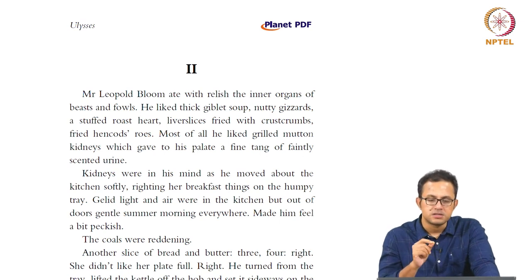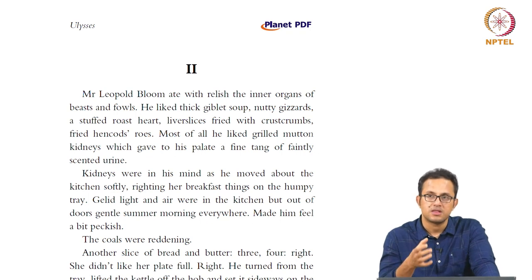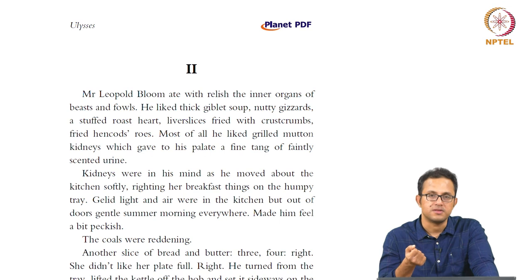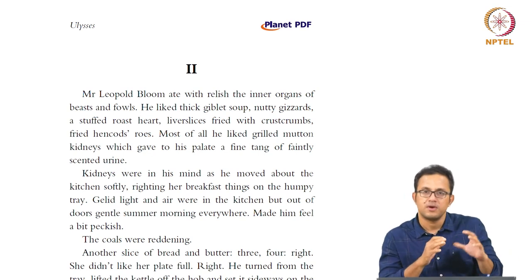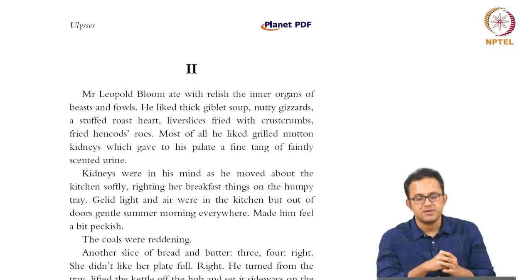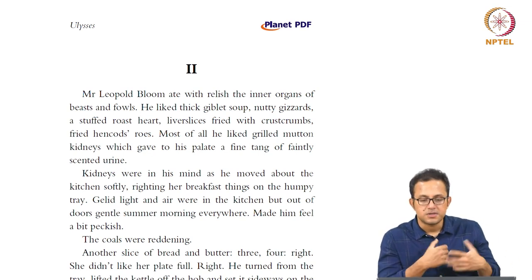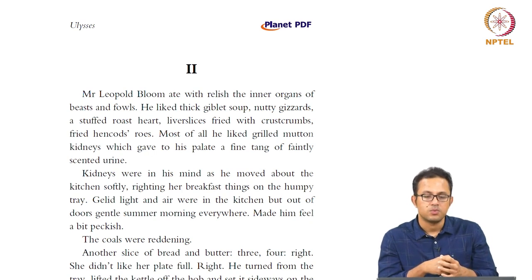As mentioned at the very beginning when we started reading this novel, one of the things it does is foreground the body and bodily sensations — the different kinds of bodily functions — and makes them part of its realism. The body becomes very much part of the realist narrative in Ulysses, which is obviously part of its scandal, part of its shock, the reason why it aroused such a massive scandal in its contemporary times.